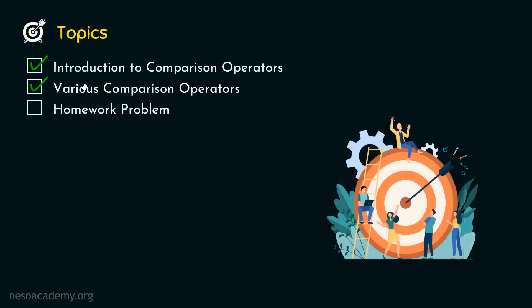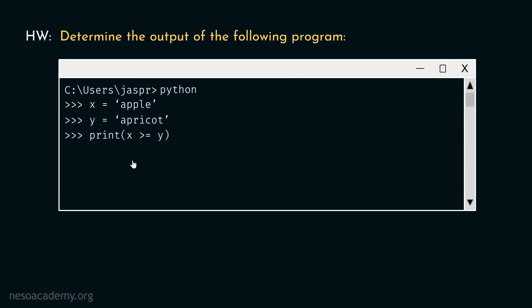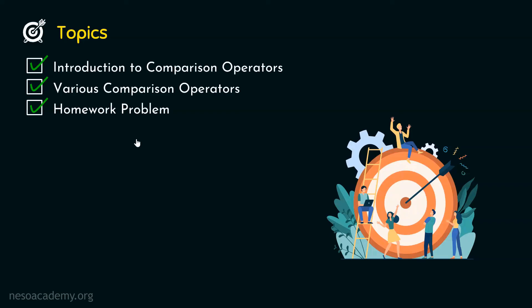I hope all the operators are completely clear. We have understood what a comparison operator is and we have seen various comparison operators. Now let's move on to the homework problem of this presentation: determine the output of the following program, and post your answers in the comment section. This means we are done with this lecture. Thank you for watching this presentation — I will see you in the next one.